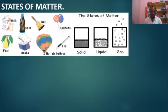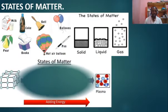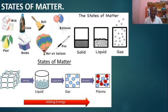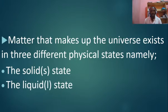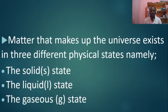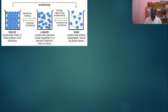Matter can exist in three states: solid, liquid, and the gaseous state. We explained that it is possible for matter to go from the solid state to the liquid state and equally to the gaseous state. In our last class, we saw the properties of solid, liquid, and the gaseous state of matter.